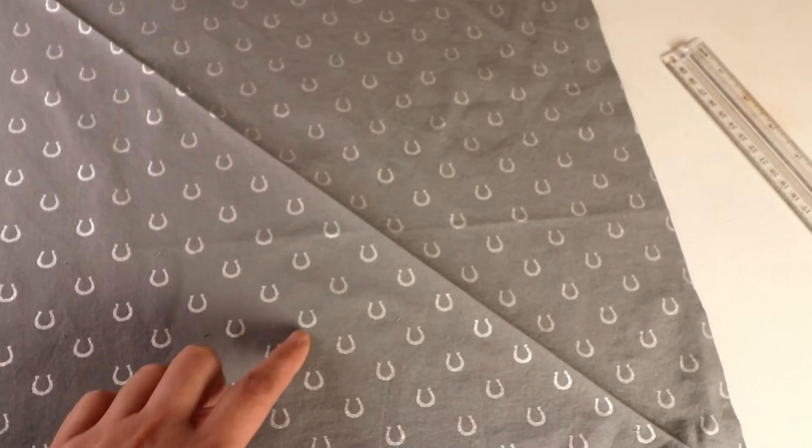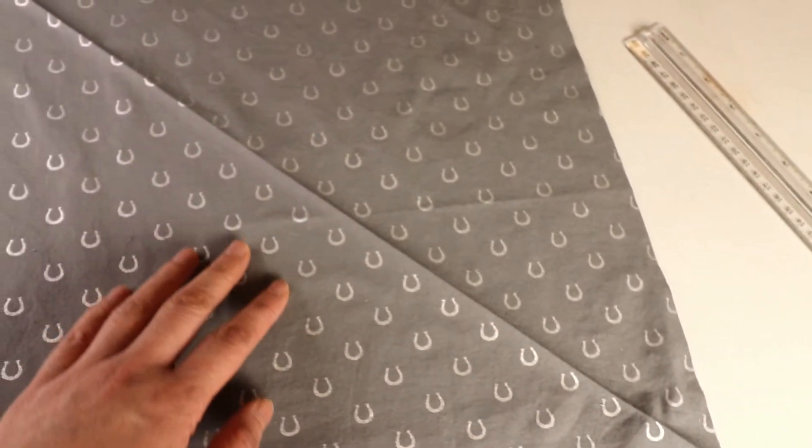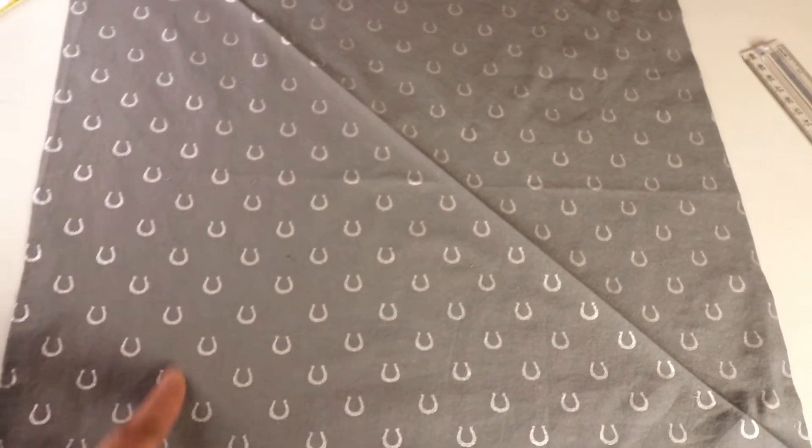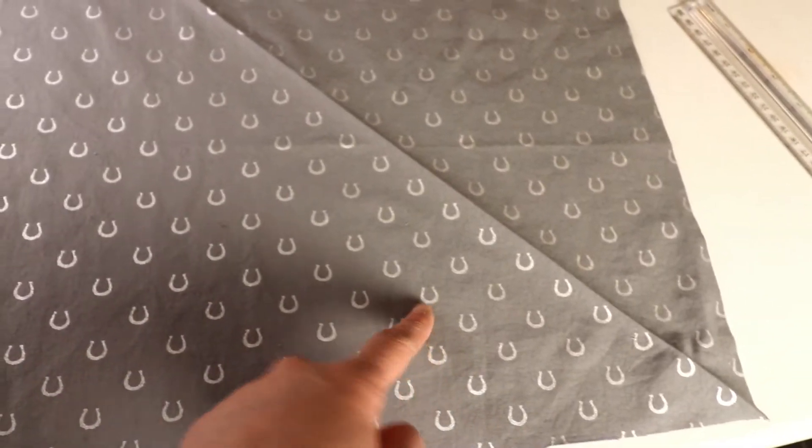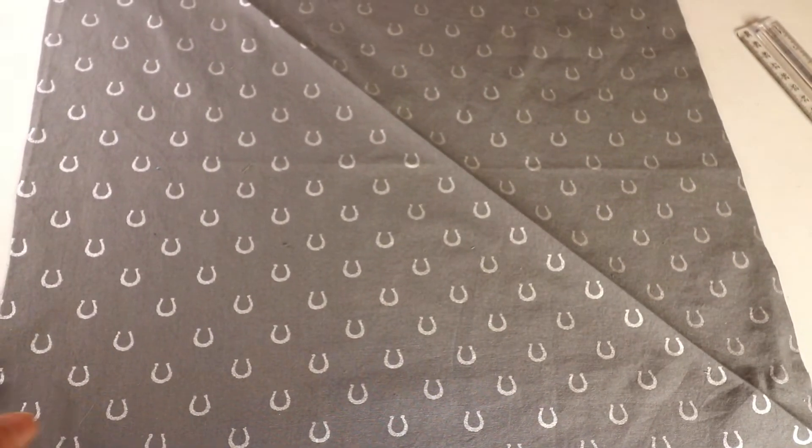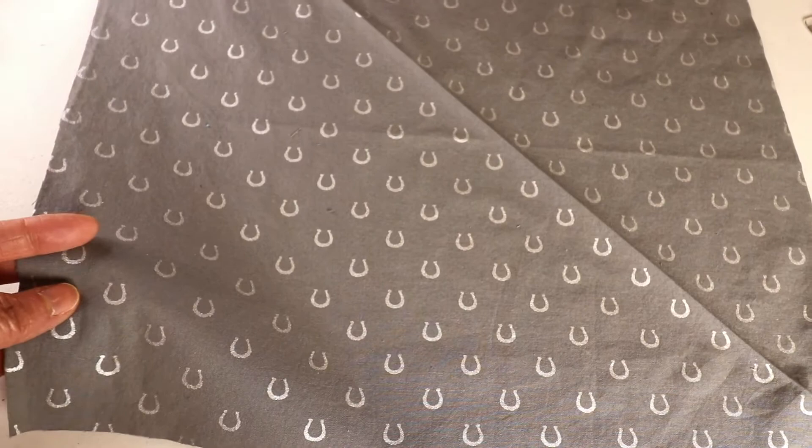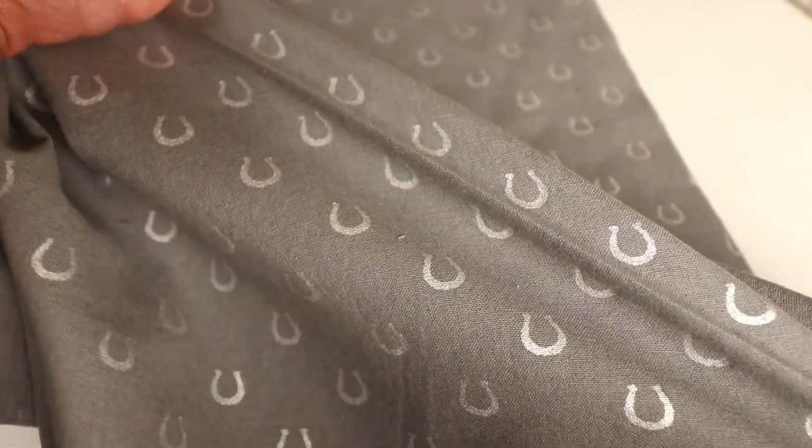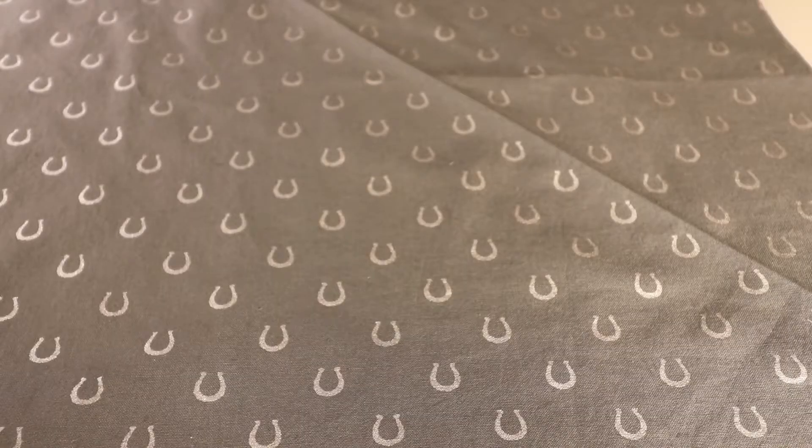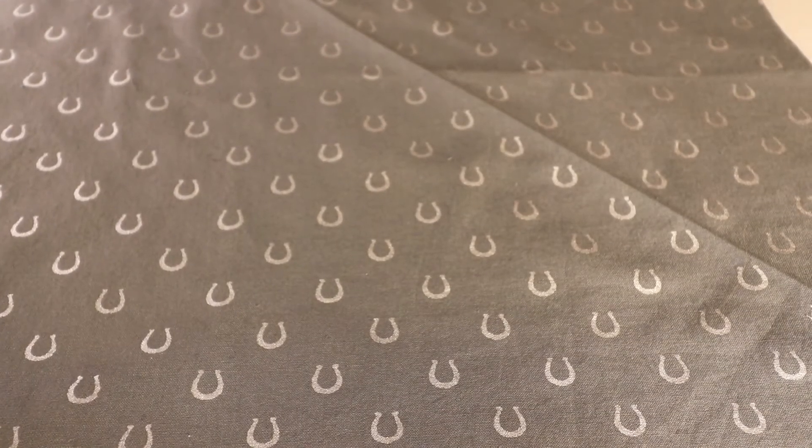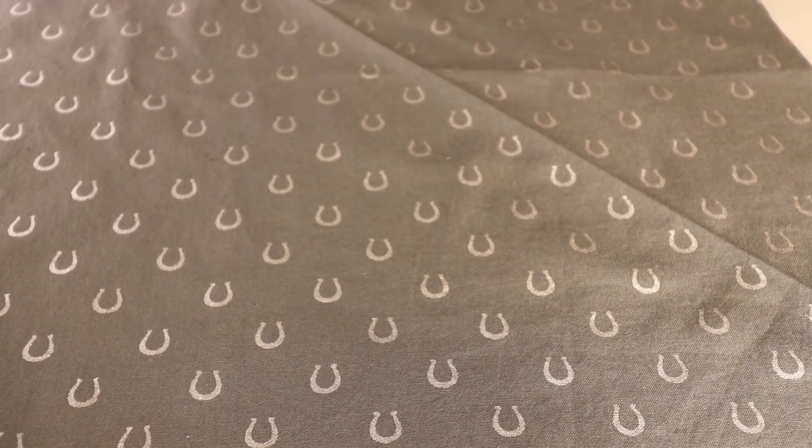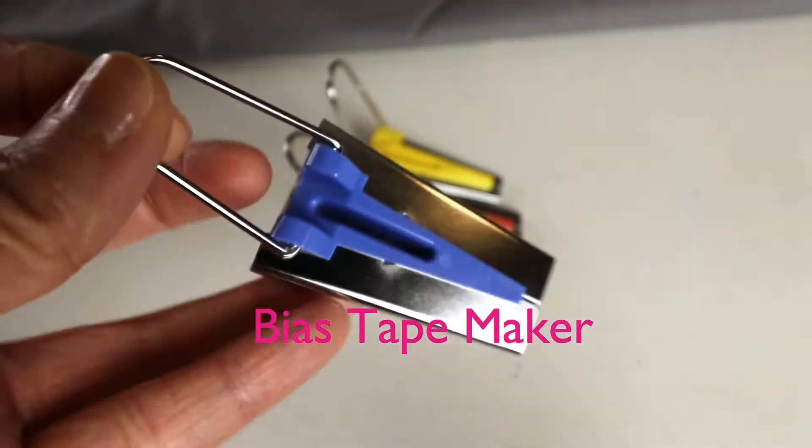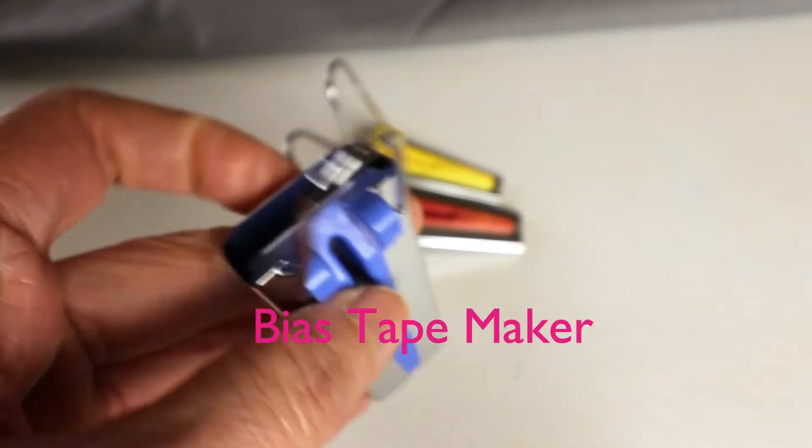The bias tape just means it's cut on a 45 degree angle because when it's vertical or horizontal cut you don't have much stretch and it doesn't have that drape. But if you cut it on a 45 degree angle it has more give, a little bit more stretchy and you'll be a nice edge. For the mask sewing the bias cut is not as important. These are bias binding makers they come in different sizes.